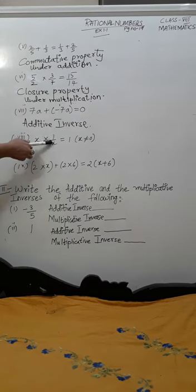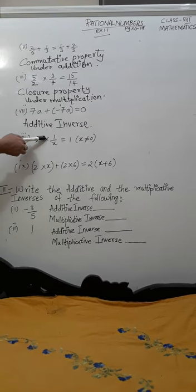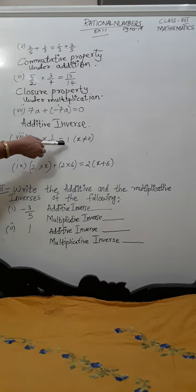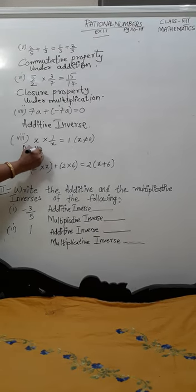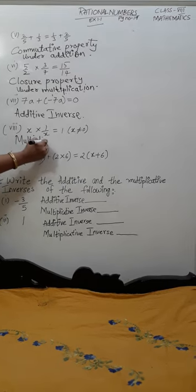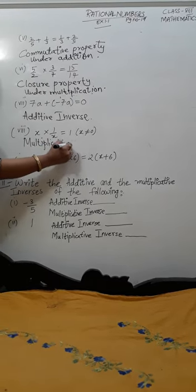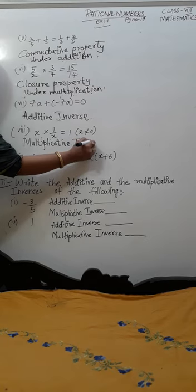X into 1 by x. A number multiplied with its reciprocal is equal to 1. Which property? Multiplicative inverse.